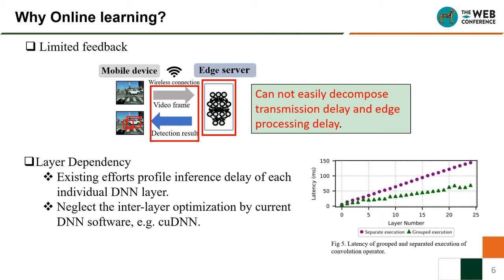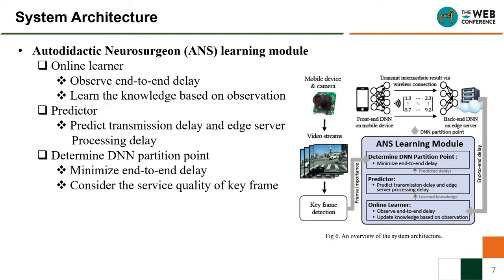With these drawbacks, that's why we propose an online learning method. Our online learning module is called Autodidactic Neurosurgeon (ANS). An overview of the system architecture is shown in Figure 6. ANS can online-learn the system parameters by observed end-to-end delay, and predict transmission delay and edge server processing delay. Based on the prediction, ANS determines a DNN partition point to minimize the end-to-end delay. ANS also considers the service quality of keyframes in video analysis.